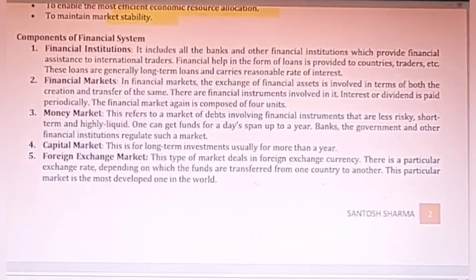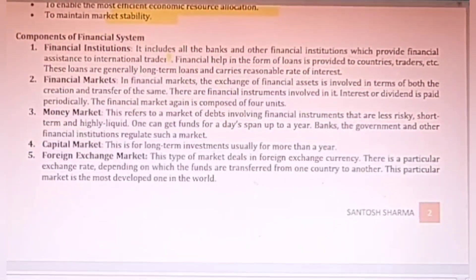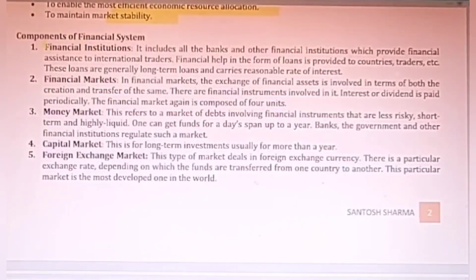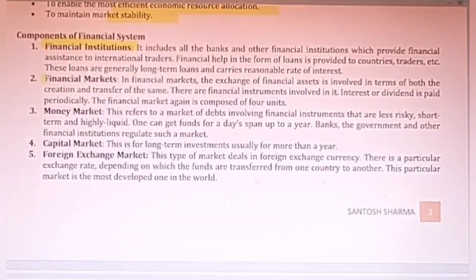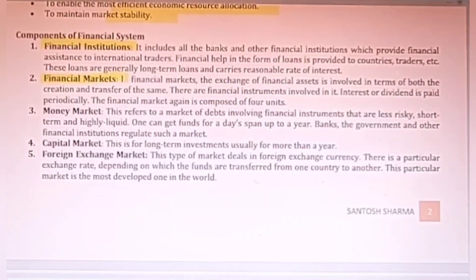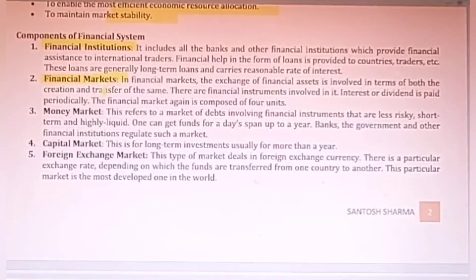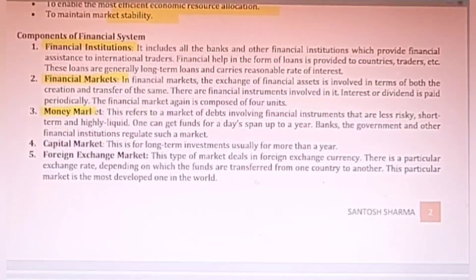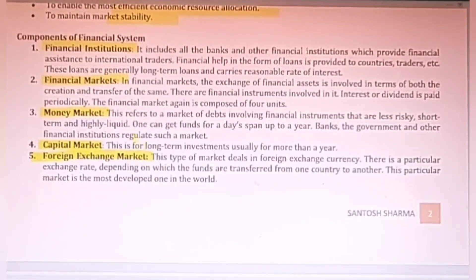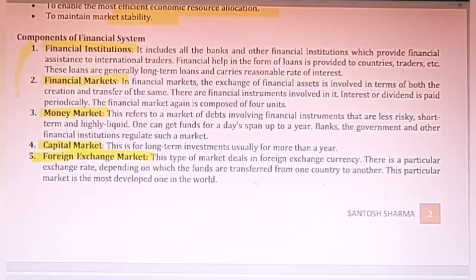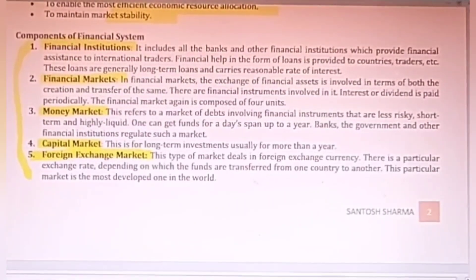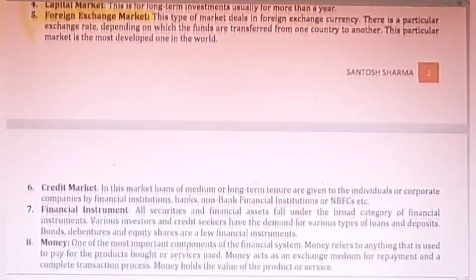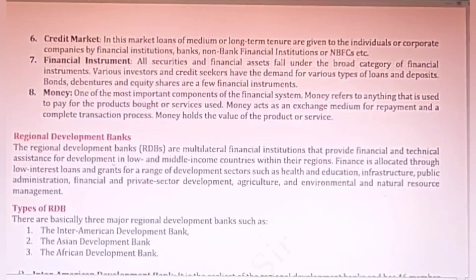These are the main objectives of this financial system. There are a few components through which it works — many institutions like WTO, IMF, and World Bank. Then there are financial markets like the capital market and money market, as well as the foreign exchange market. These are the important components of the financial system followed all over the world.